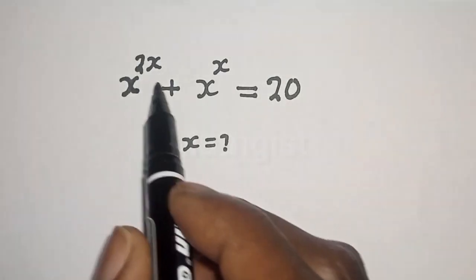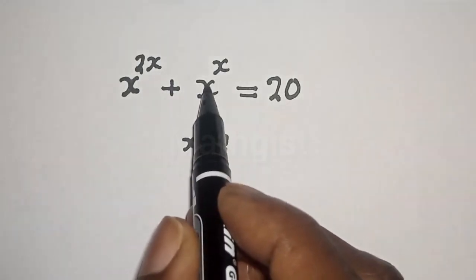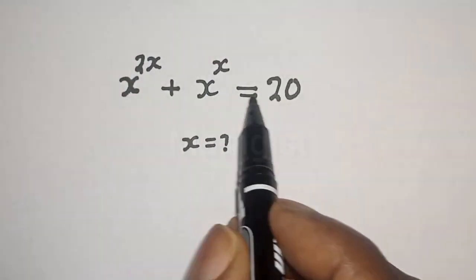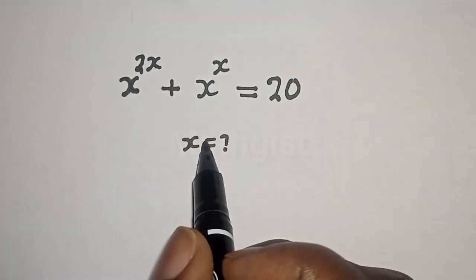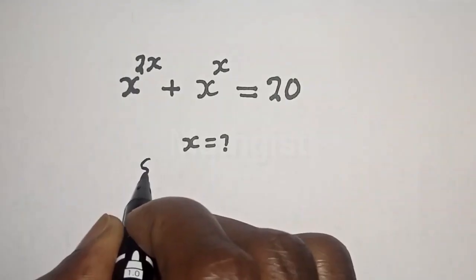s raised to power 2s plus s raised to power s is equal to 20. What is the value of s?